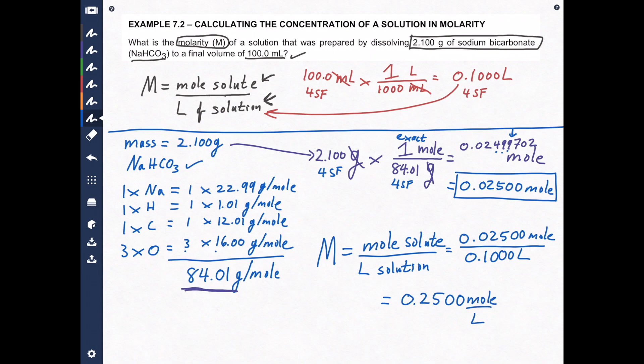Or 0.2500 capital M. Both answers are acceptable because both are saying the same thing. It's just one has the capital M, which represents moles per liter. Or you can just write out moles per liter. Depends on what you like to do.